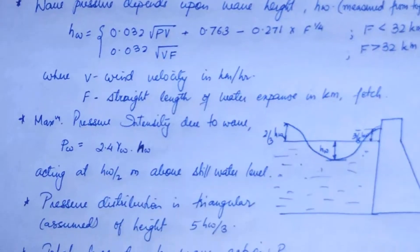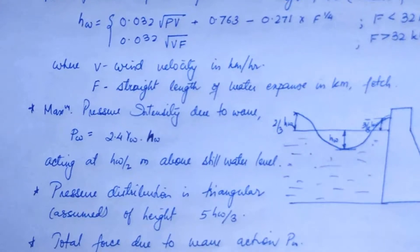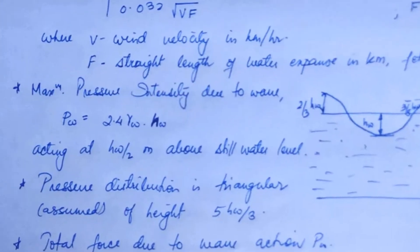The maximum pressure intensity due to wave is actually given by pw is equal to 2.4 gamma w hw, and it acts at hw by 2 meter above the still water level.